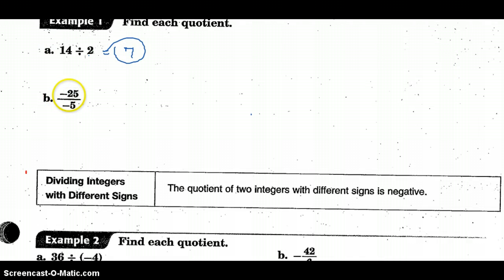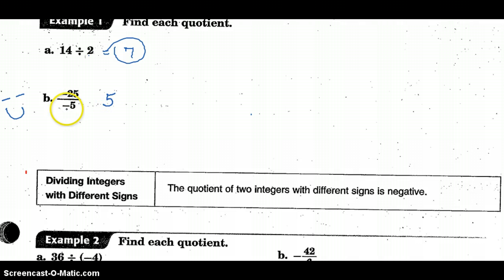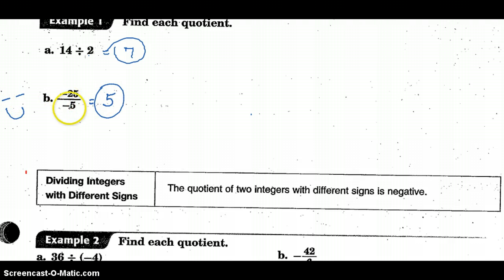Here we have negative 25 divided by negative 5. There are two negatives, so I know my outcome should be positive. 5 times what gives me 25 — 5 times 5. But wait, it's a negative 5: negative 5 times positive 5 would be opposite signs and give negative 25. So if you know the rule about the signs, you can determine your answer is positive before you do the actual math of 5 times what is 25.